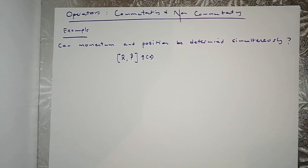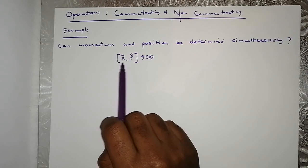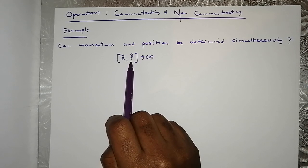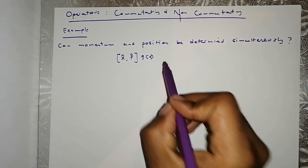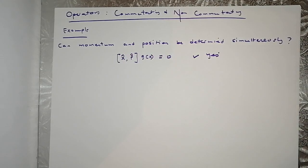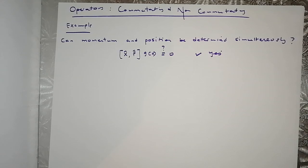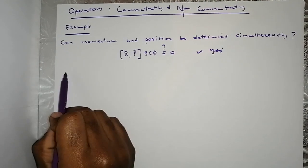Welcome back to quantum mechanics. In this video we're tackling commuting and non-commuting operators. This is a follow-up example from the previous video where we showed two operators that commuted. The question here is: can momentum and position be determined simultaneously? Basically, do the position operator and momentum operator commute? If the commutator equals zero, then yes, momentum and position can be determined simultaneously.